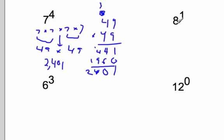8 to the 1st. Well, anything to the 1st power is going to equal the base. And then we have 6 to the 3rd. So write it out. And now do it piece by piece. 6 times 6 is 36, times 6. If you don't know that, you can do it out, but it will be 216.